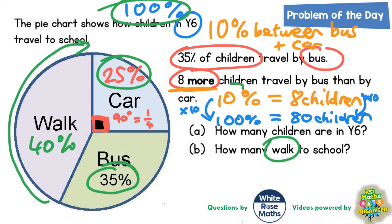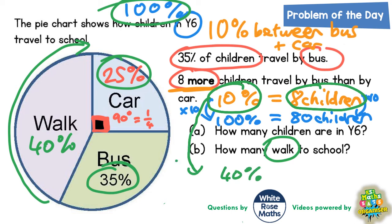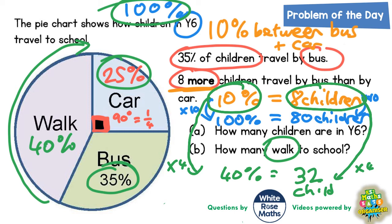Going back to the original fact that 10% is worth 8 children — we can use that again. To get from 10% to 40%, that's making it 4 times bigger, so you have to make 8 children 4 times bigger as well. 8 children times 4 would be 32 children. So the 40% for walking is worth 32 children.